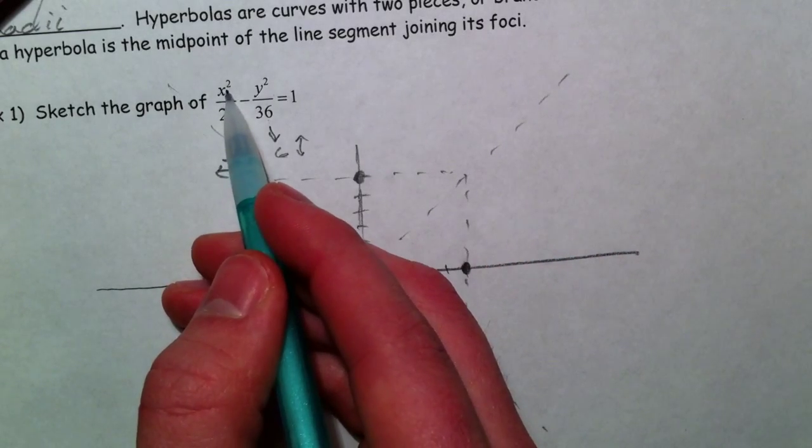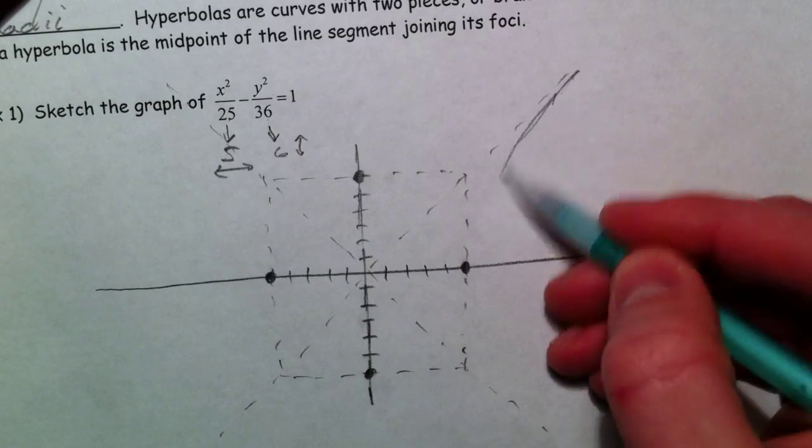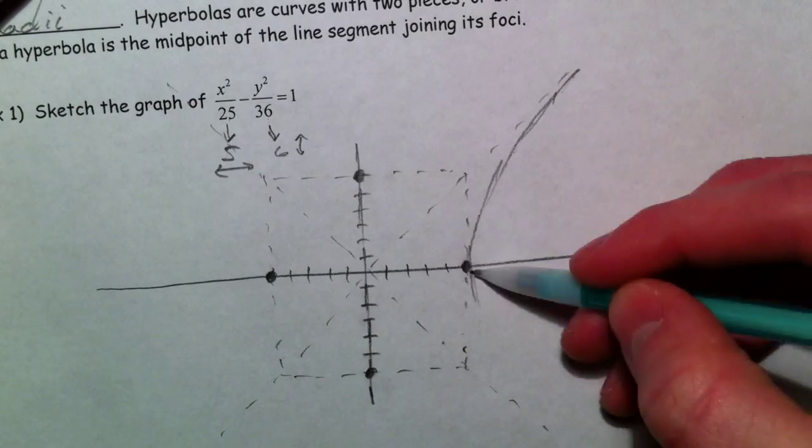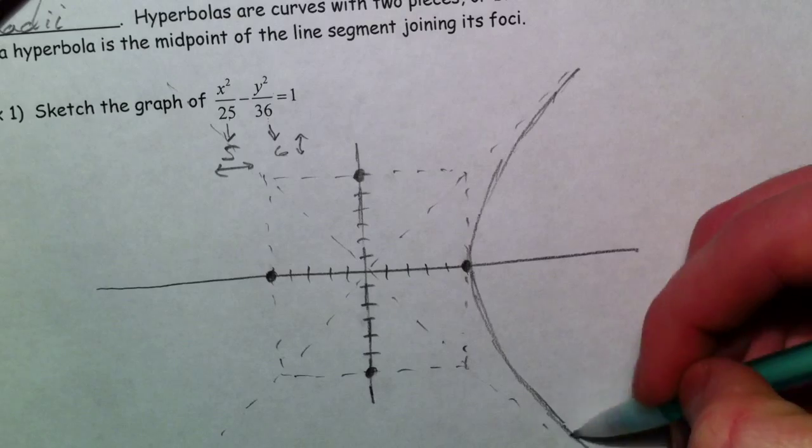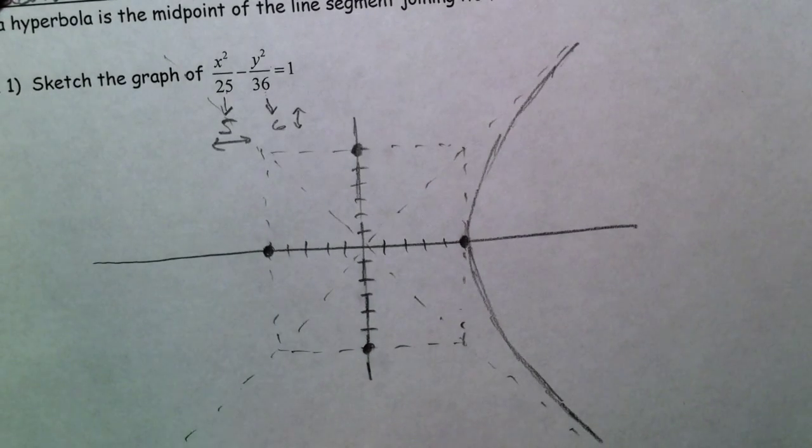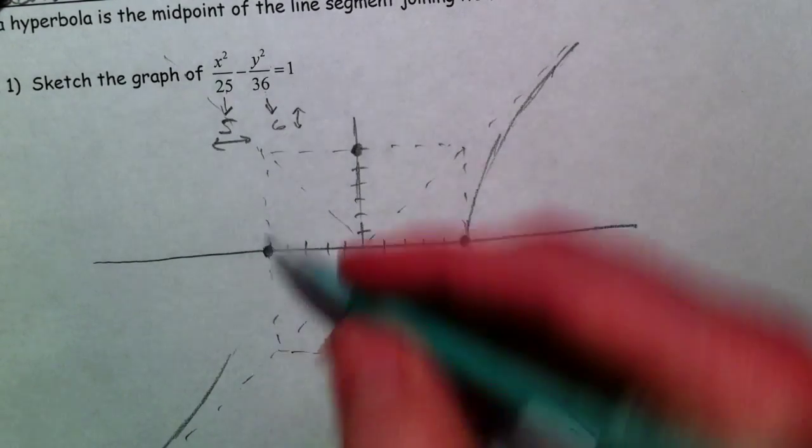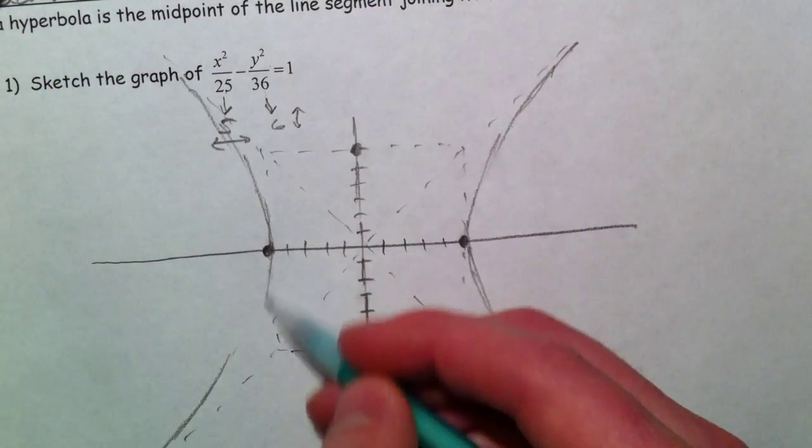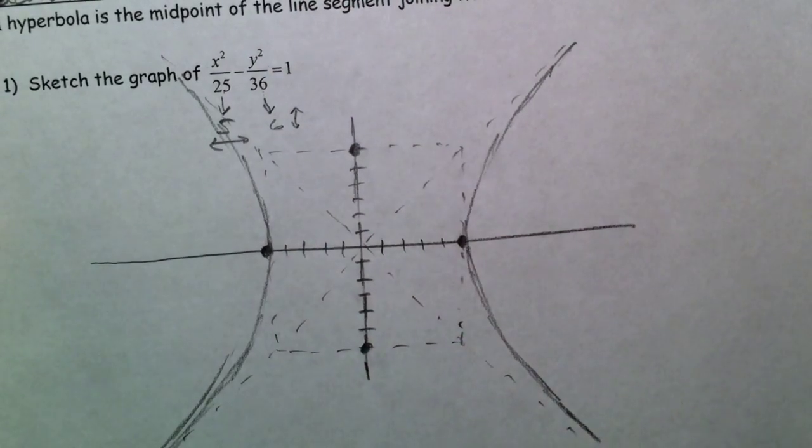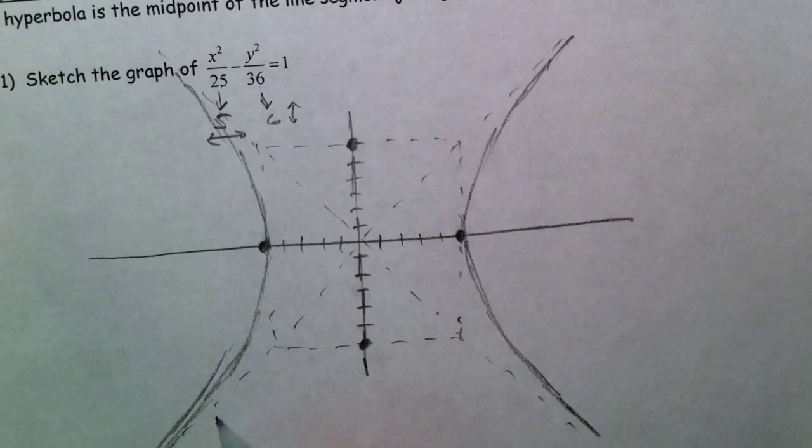If it's x-squared minus y-squared, our hyperbola is going to open left to right, and it's going to look like this. And that's what our hyperbola looks like. Use your asymptotes to your advantage.